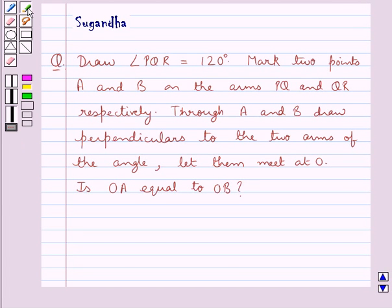Hello and welcome to the session. In this session we discuss the following question which says: Draw angle PQR equal to 120 degrees. Mark two points A and B on the arms PQ and QR respectively. Through A and B drop perpendiculars to the two arms of the angle. Let them meet at O. Is OA equal to OB?